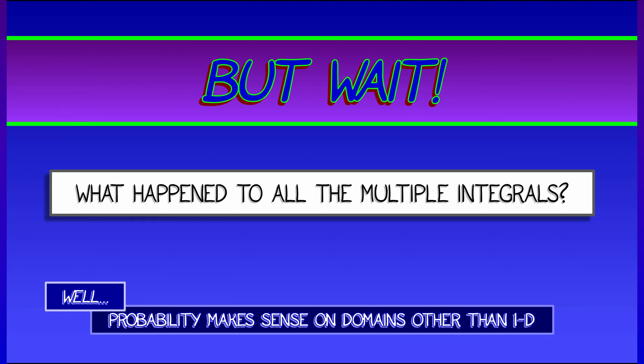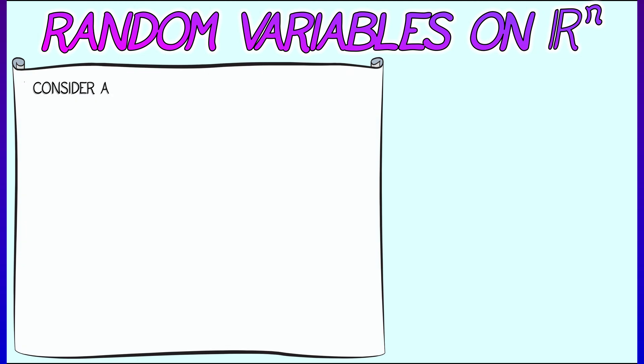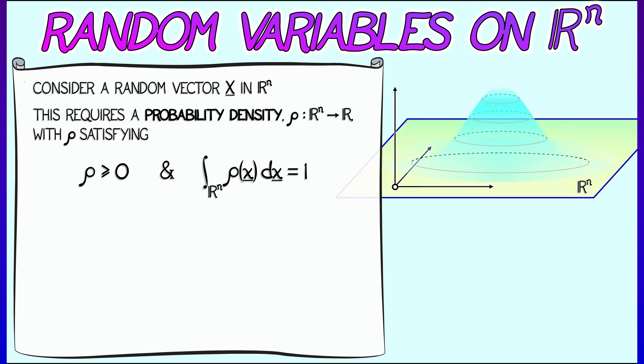We can move from 1D to higher dimensions. We can look at random variables on R^n. Consider a random variable, capital X, in R^n. This is characterized by a probability density, rho, a scalar-valued function on R^n that, just like in 1D, has to be non-negative and has to have total mass equal to 1. That is, if I integrate rho of x dx with respect to the volume element on R^n, I get a net mass of 1.